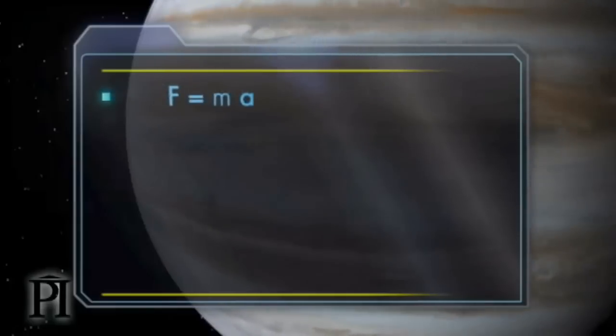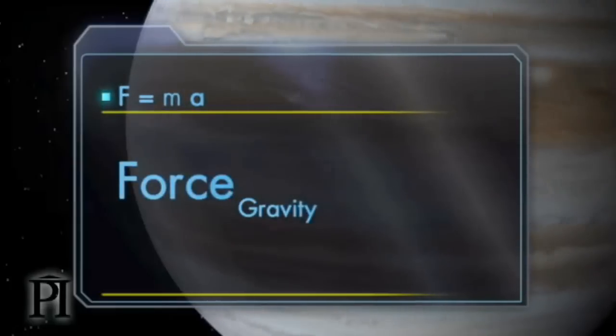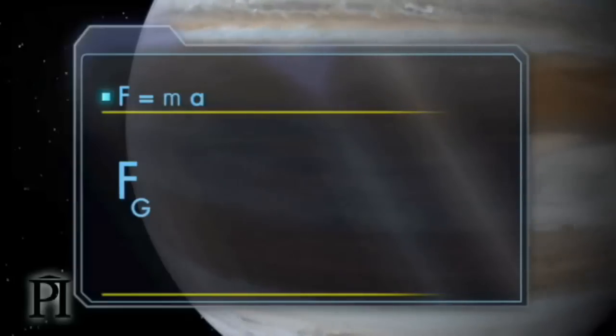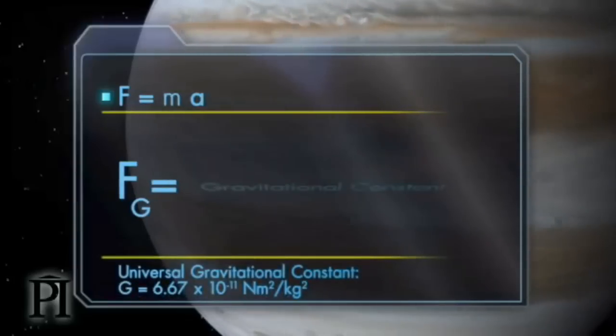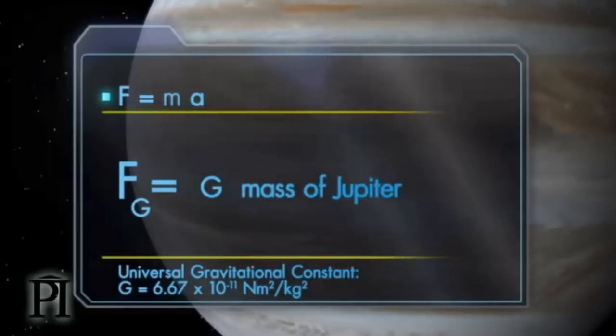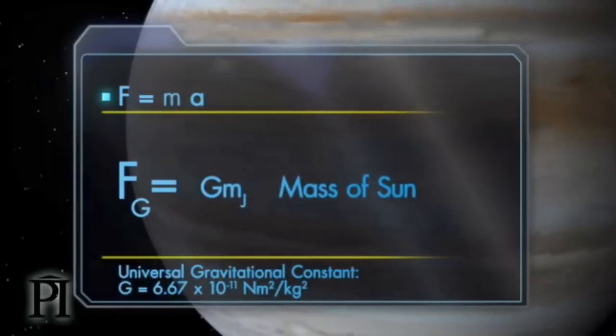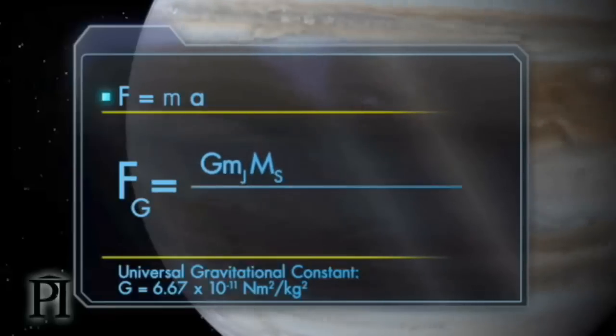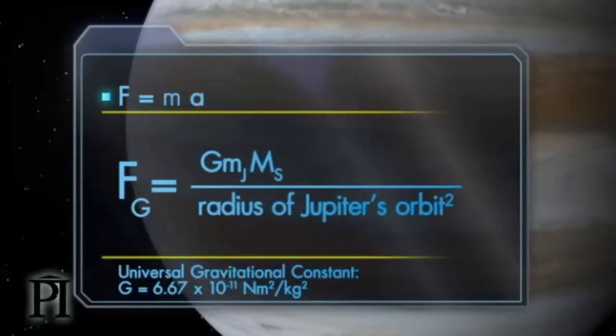The net force is the gravitational force the sun exerts on Jupiter. The magnitude of this force is equal to the universal gravitational constant times the mass of Jupiter times the mass of the sun, divided by the square of the radius of Jupiter's orbit.